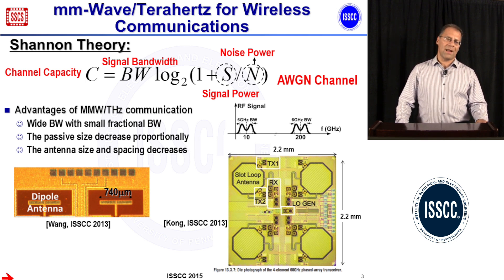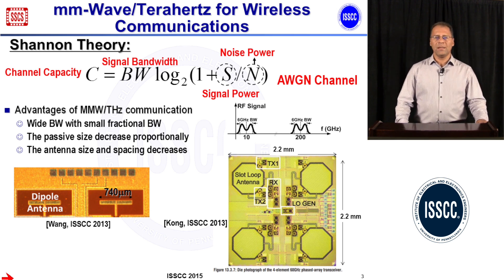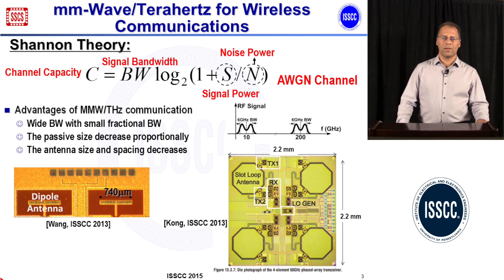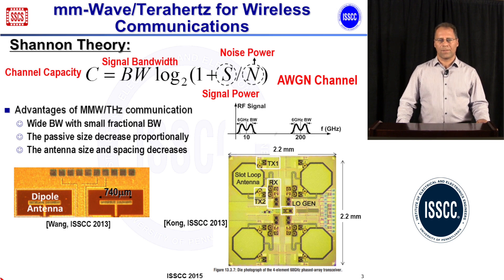The small fractional bandwidth is the bandwidth normalized by the carrier frequency. By increasing the bandwidth, we can increase the maximum data rate, which makes it possible to transmit multi-gigabit per second data.